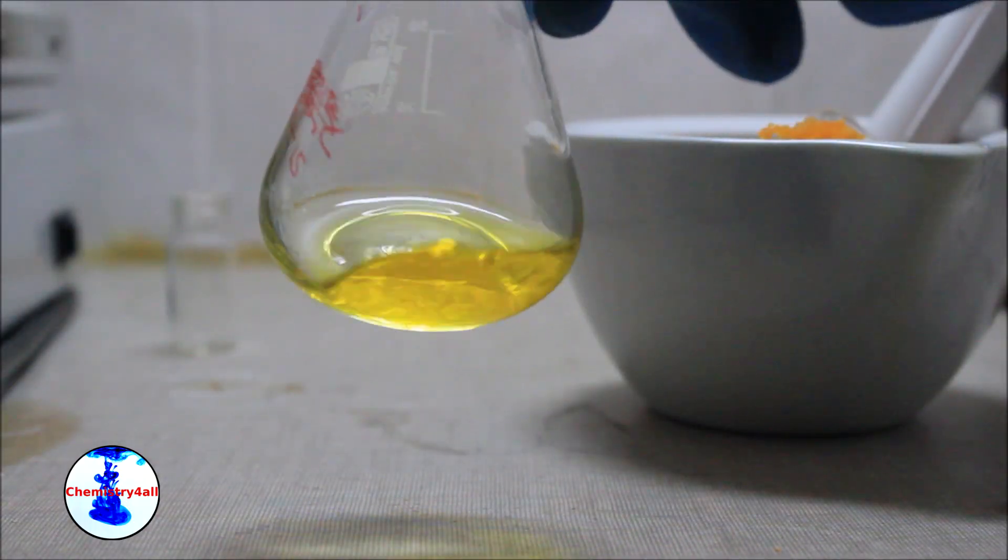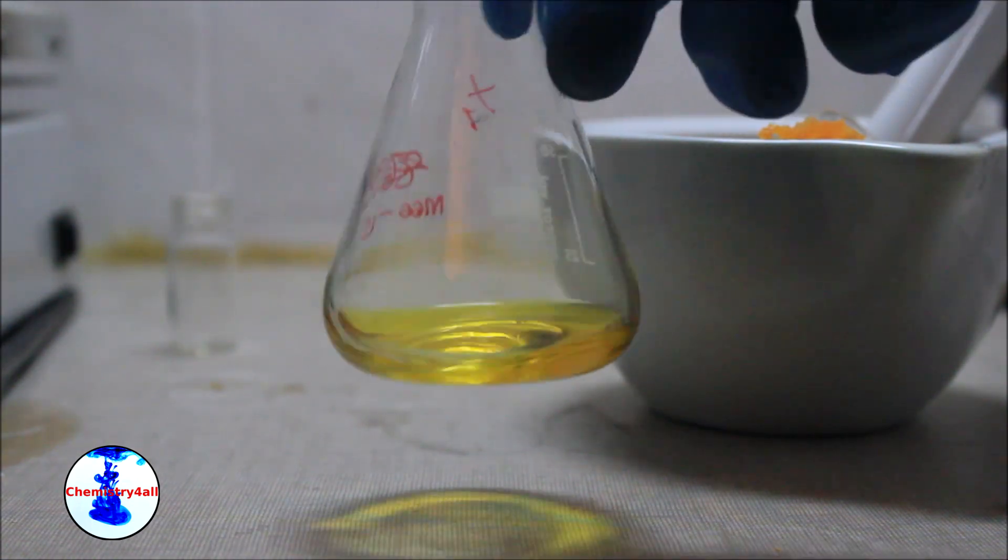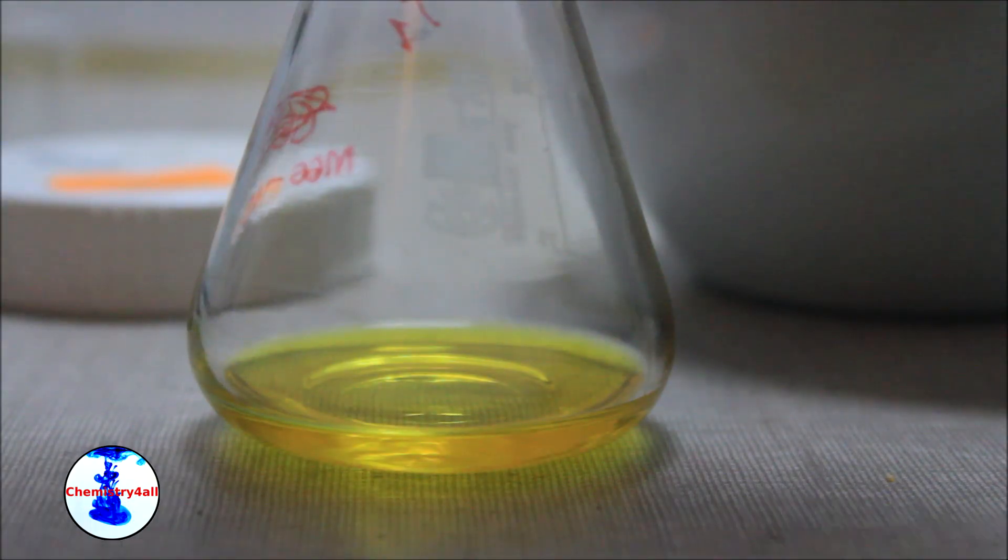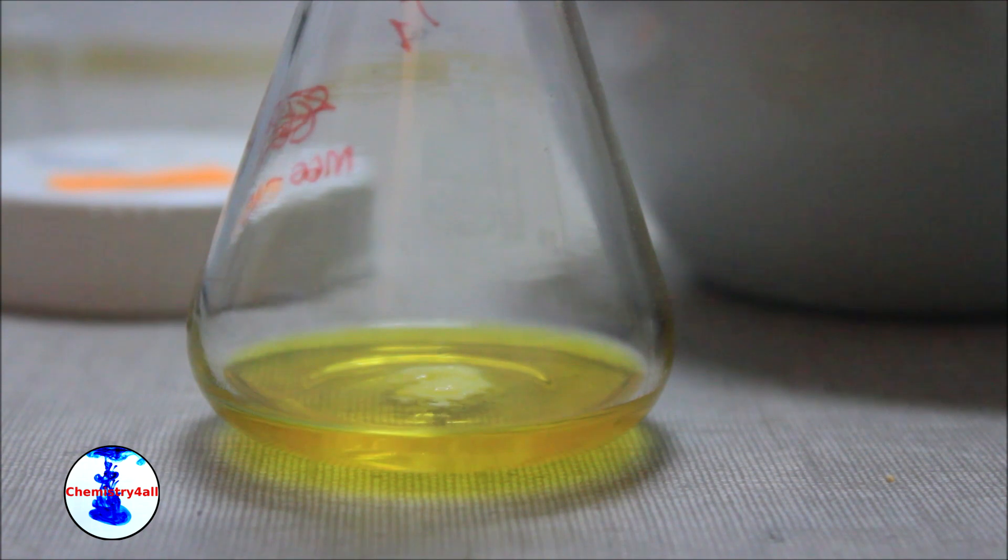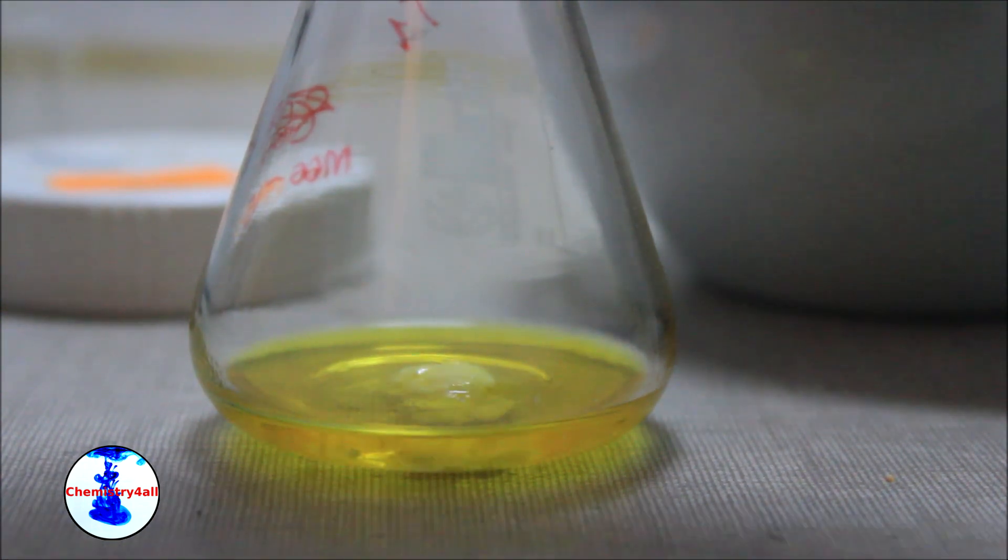At this point we have obtained a crude solution of trans-beta-carotene. However, this solution is still wet and therefore some anhydrous magnesium sulfate must be added to remove the majority of the water.